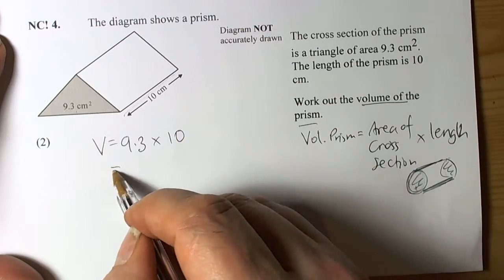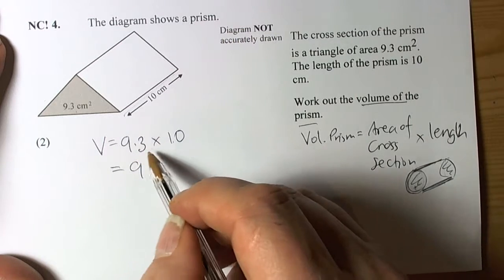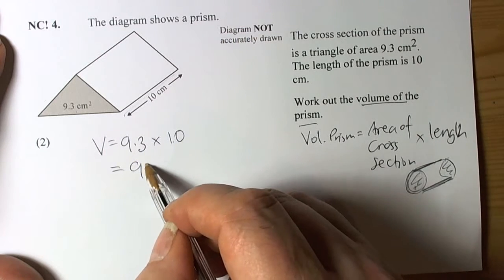So 9.3 times 10. Multiplying by 10, the digits move up once, so they move up one place value.